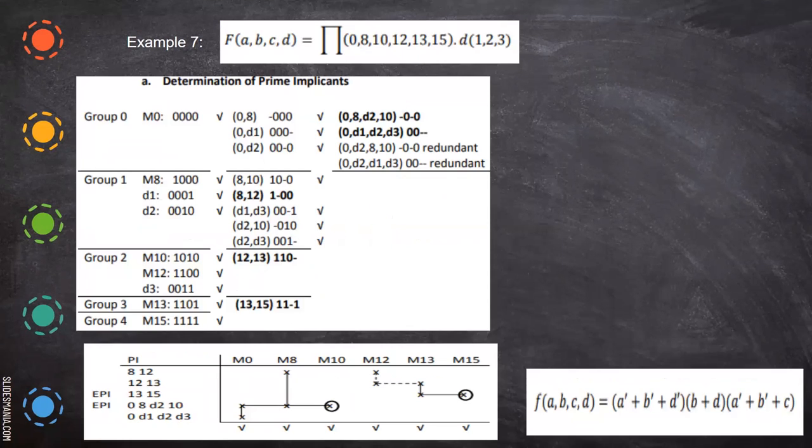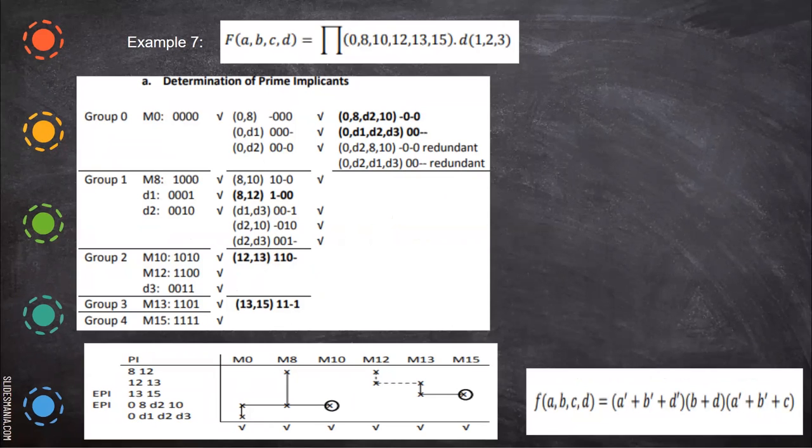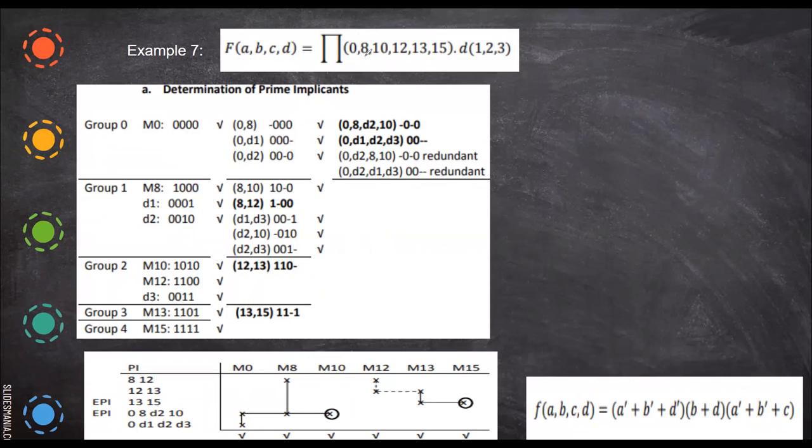With the don't care. So here, when you see this, 0, 8, 10, these are all the max terms, and this is the don't care condition of this max term. So as usual, you arrange them according to the single ones, two ones, etc. And then finally, we check all these things, and we find a matching pair of this, and we come to this solution.